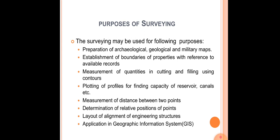The measurement of distance between any two points and their relative positions — how far one point is from another — can also be determined by the process of surveying. The layout and alignment of various engineering structures like roads and railways are also done through surveying. It is also used as an application in the Geographic Information System, which we call GIS.